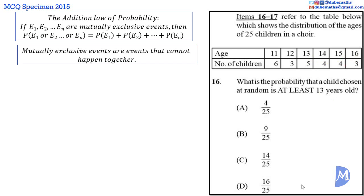The addition law of probability says that if E1, E2, up to En are mutually exclusive events, then the probability of E1 or E2 or up to En is equal to the probability of E1 added to the probability of E2 added to all up to the probability of En. Mutually exclusive events are events that cannot happen together. A child cannot be two ages at the same time. Thus, the ages of children are mutually exclusive events. Therefore, the probability that the child is 13 years old or 14 years old or 15 years old or 16 years old is equal to the probability that the child is 13 plus the other probabilities.